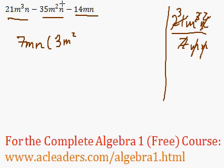Next, -35m²n. Negative 35 divided by 7 is -5. The m² divided by m is just m, and the n's cancel out.